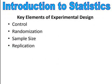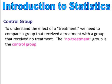Now, some key elements of experimental design: control, randomization, sample size, and replication. When we talk about control, we have a control group. To understand the effects of the treatment, we need to compare a group that receives the treatment with a group that receives no treatment — and the no-treatment group is the control group. When you're applying a treatment, we don't know what's going to happen, so the control group is when we have no treatment.